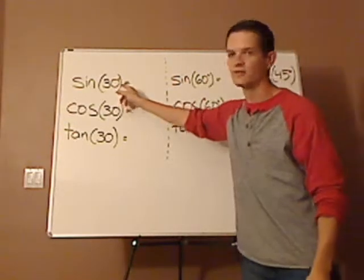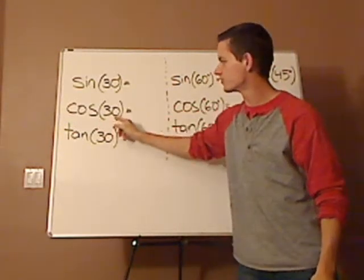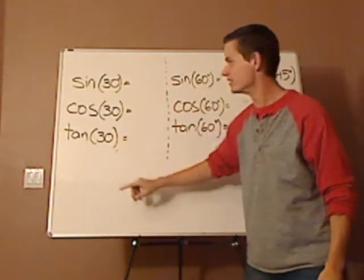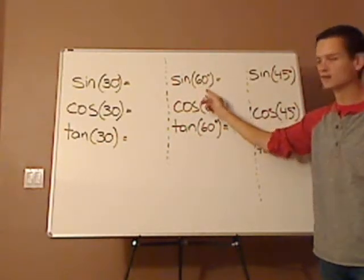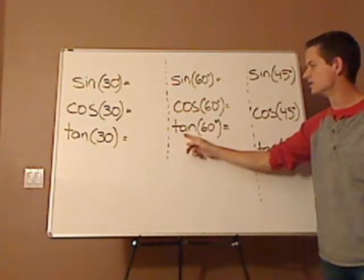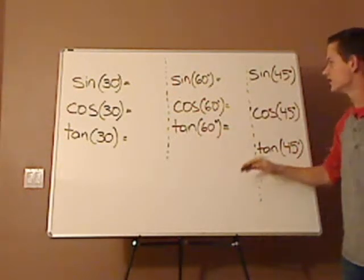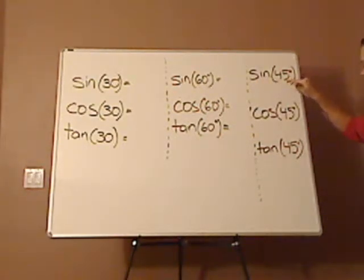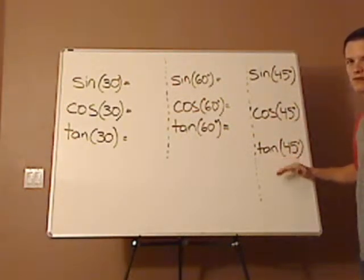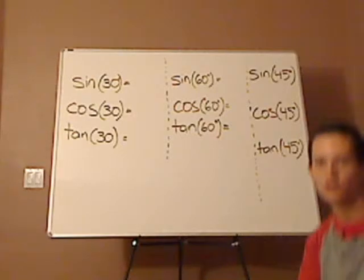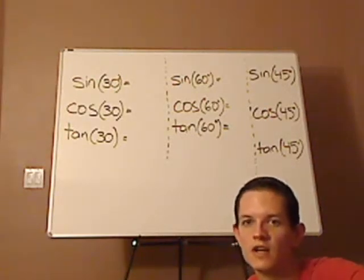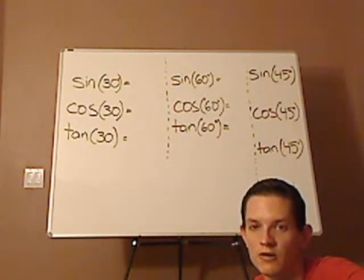So do these trigonometric functions. This is sine of 30 degrees, cosine of 30 degrees, tan of 30 degrees. This is sine of 60 degrees, cosine of 60 degrees, tan of 60 degrees, and this is sine of 45 degrees, cosine of 45 degrees, and tan of 45 degrees. So try those, pause the video, and see if you can do them on your own.